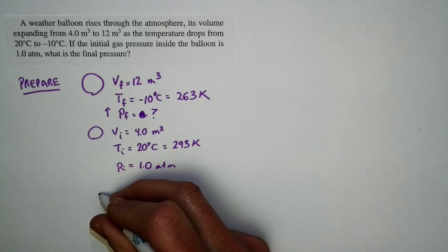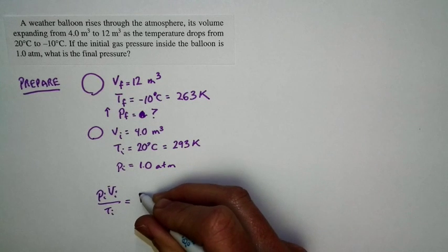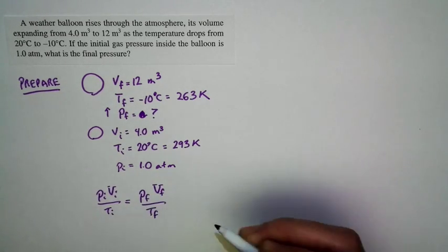So to solve it, we can just use this: Pi times Vi over Ti equals Pf times Vf over Tf.